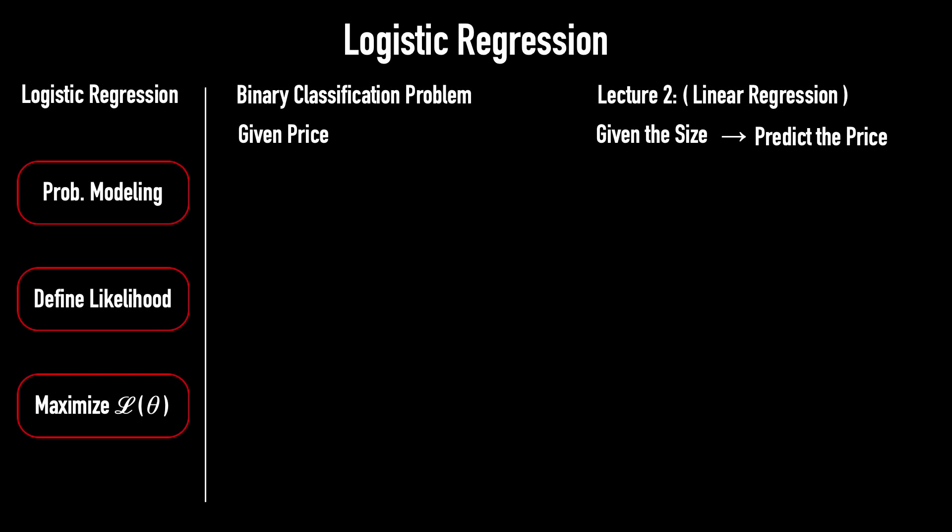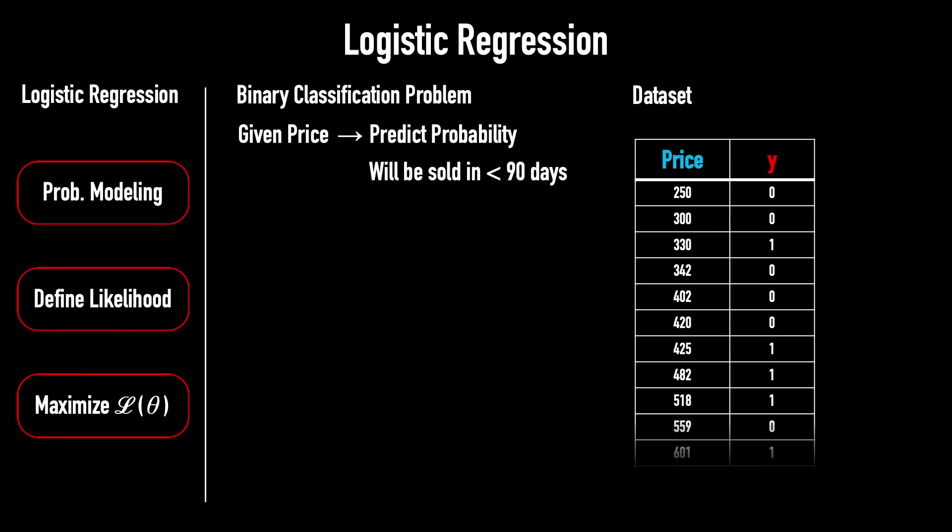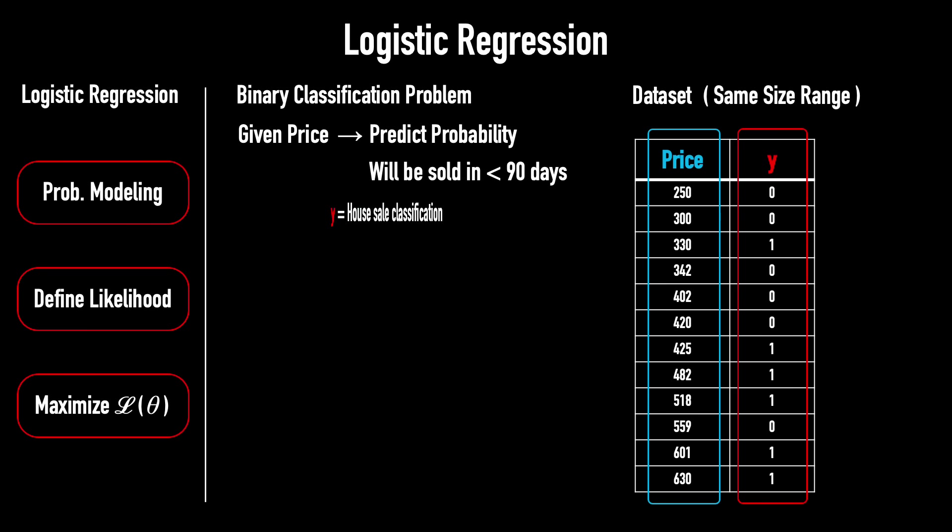Now, given the price, logistic regression predicts the probability that the house will be sold in under 90 days. Let's look at this dataset. Assume all houses are in the same size range. The first column shows the house prices. The second column shows the output.